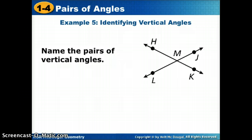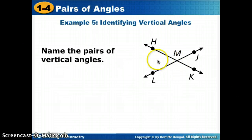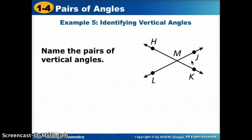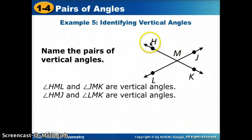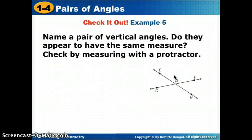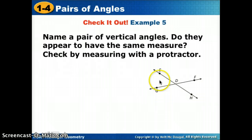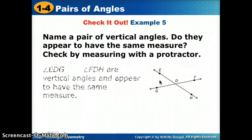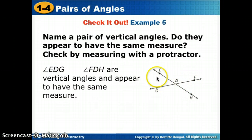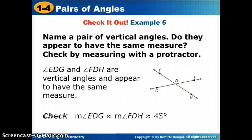Let's name two pairs of vertical angles. Starting with angle HML, its vertical angle — the one not sharing any sides — is JMK. The other pair is HMJ and LMK — those are the top and bottom non-adjacent angles. In another example, one pair would be EDG and FDH, which are non-adjacent. Looking at the picture, their measures appear equal — approximately 45 degrees each.